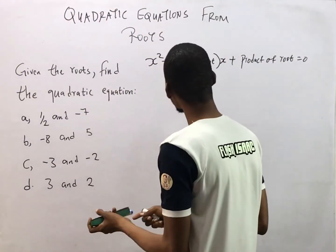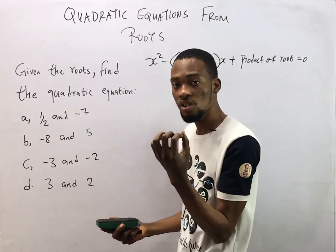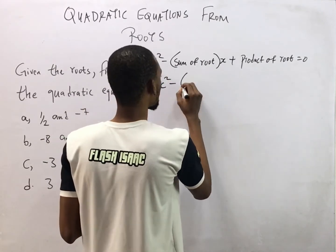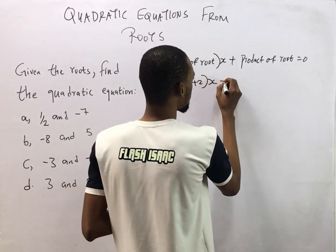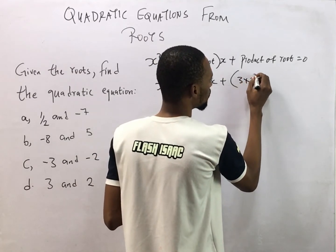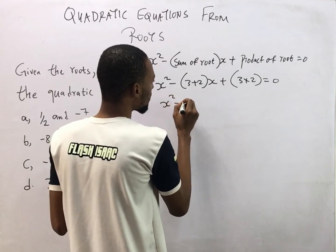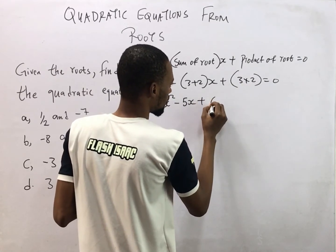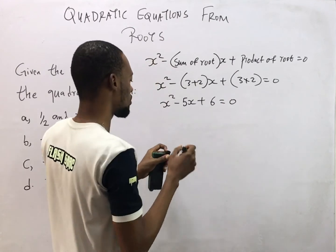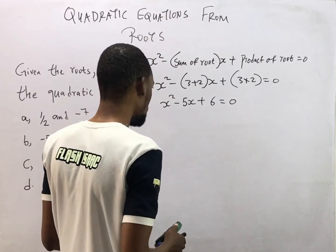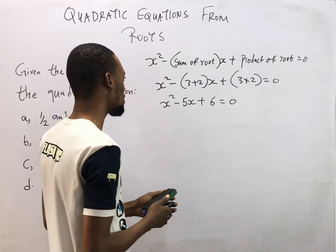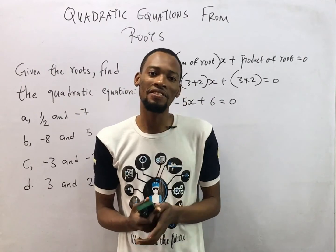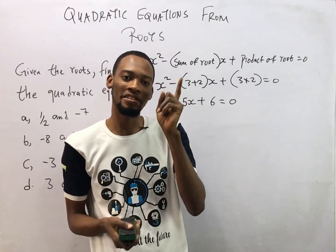The last question asks for the quadratic equation whose roots are 3 and 2. The equation is s² - (3 + 2)s + (3 × 2) = 0. Since 3 + 2 = 5 and 3 × 2 = 6, this becomes s² - 5s + 6 = 0. That is the quadratic equation whose roots are 3 and 2. I hope you enjoyed this topic on how to find a quadratic equation when the roots are given. Thanks for watching, and don't forget to subscribe for more amazing videos.